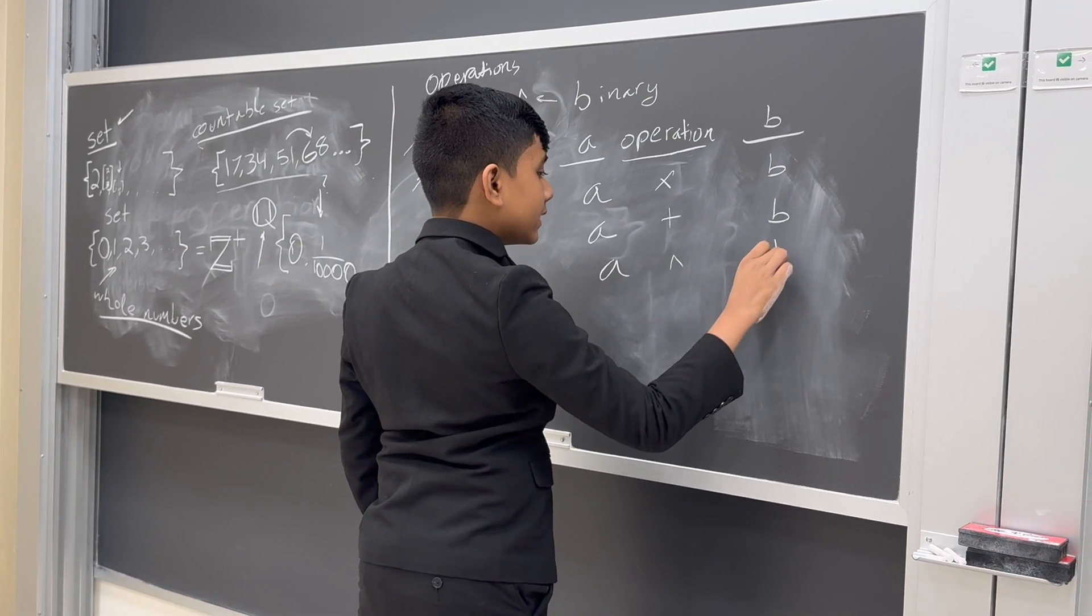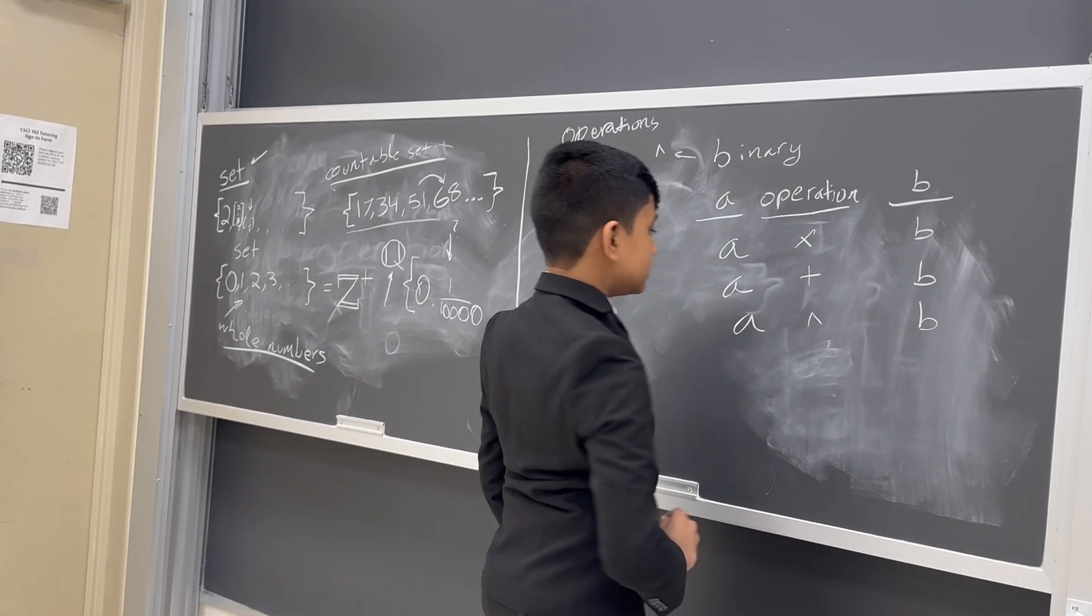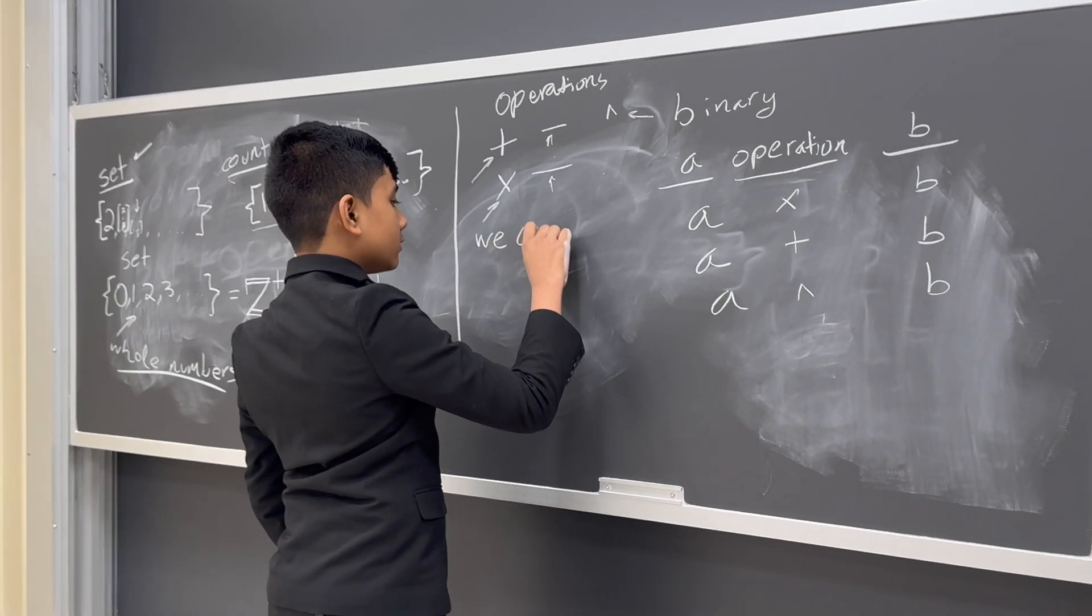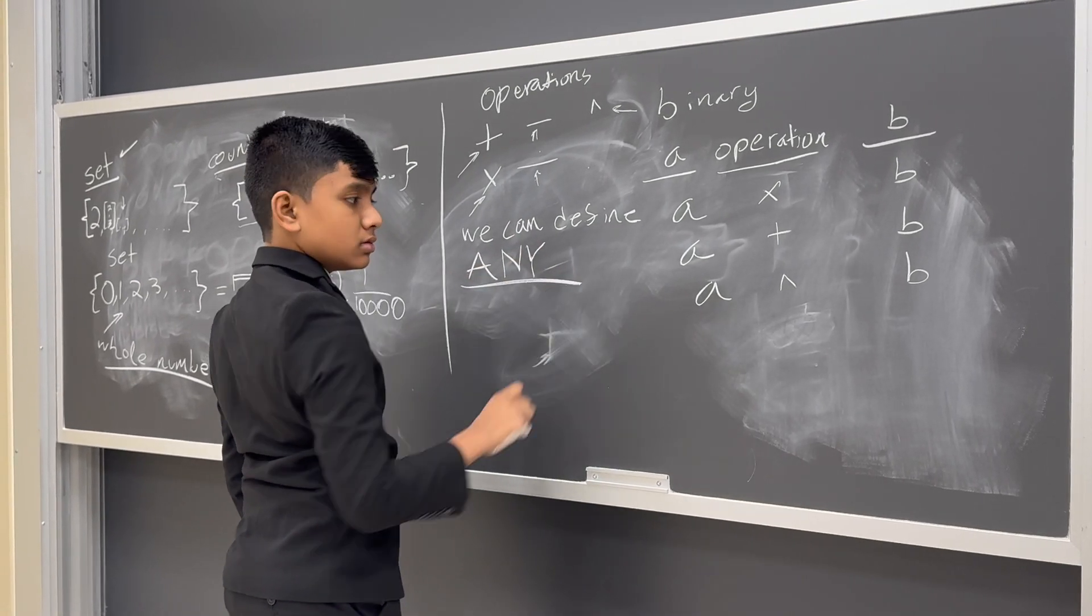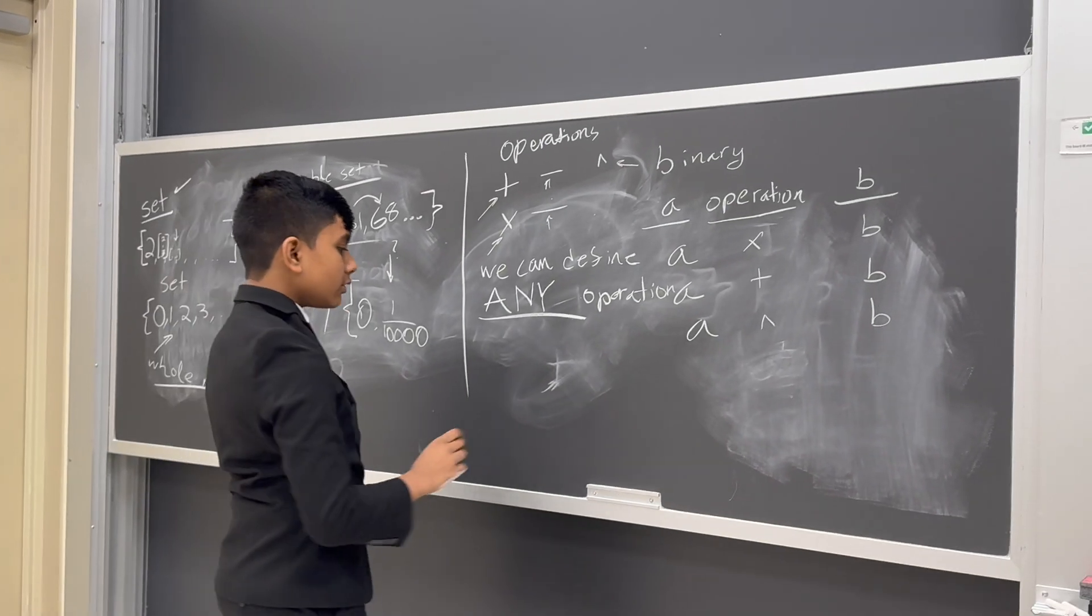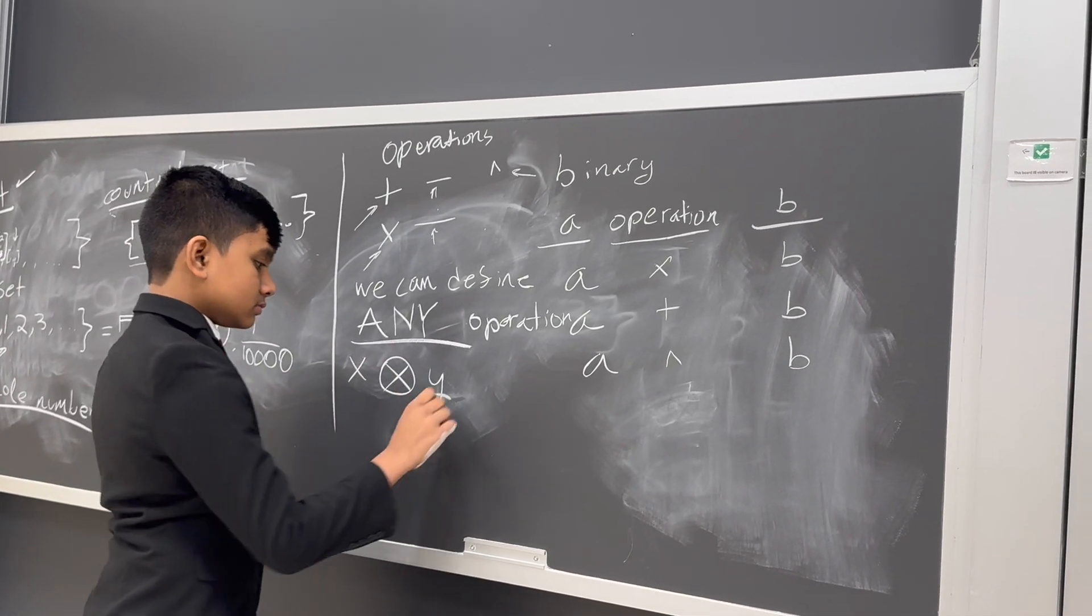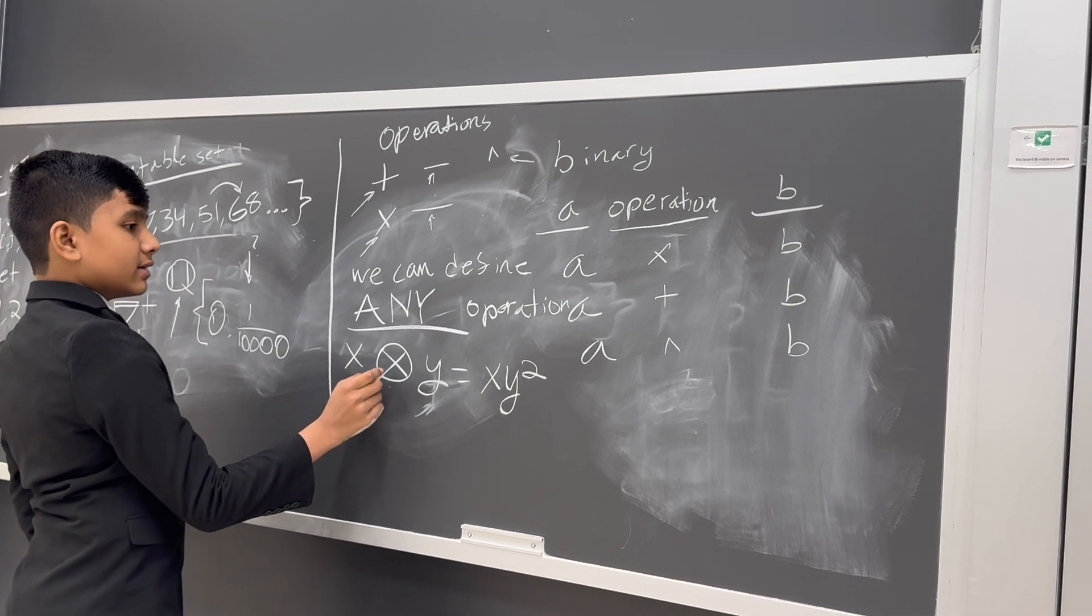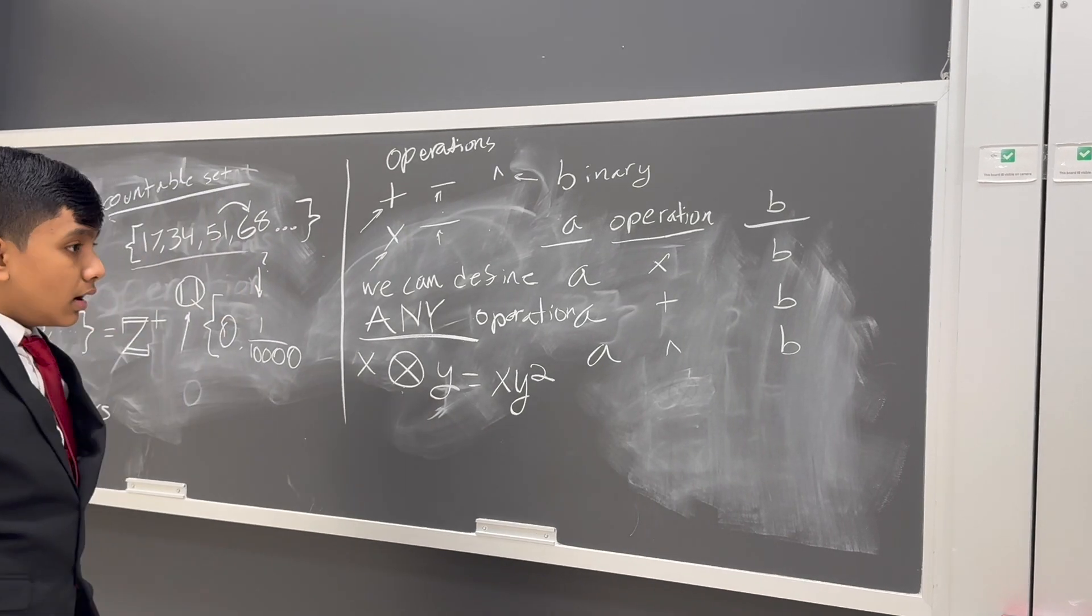Sometimes we may stylize it, because writing this out doesn't look so good, so we might write this instead. But, the meaning stays inherently the same. So, we can define any operation. For example, consider an operation, represented by this symbol, such that something like this happens. And we don't even have to make it so that they are binary. We can have these operations happen to just one element of the set.